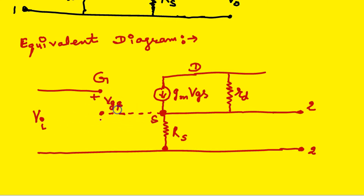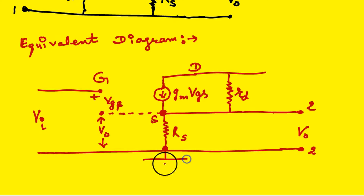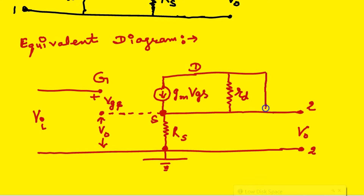Port 2 is the output port across which V0 is taken. Between G and S, the voltage is VGS. This terminal is connected to port 2.